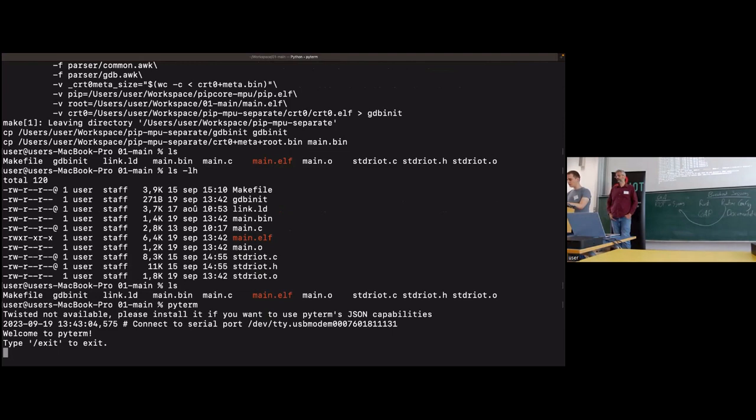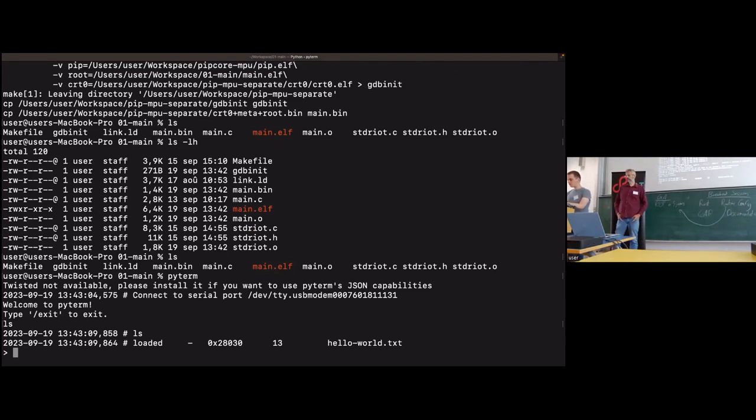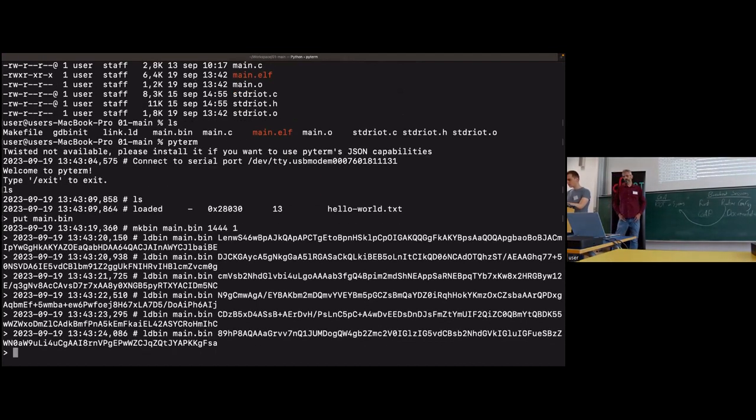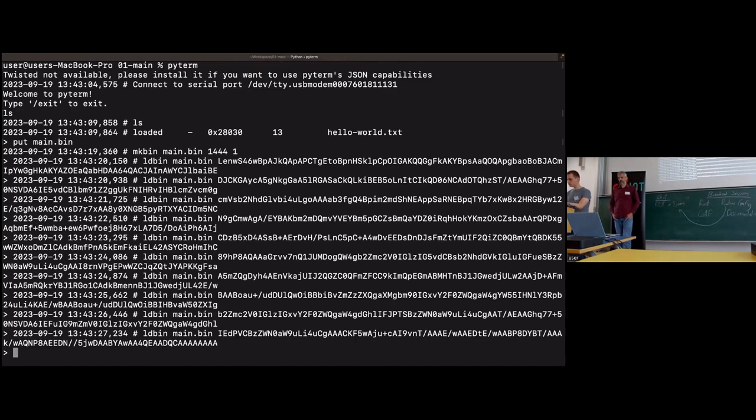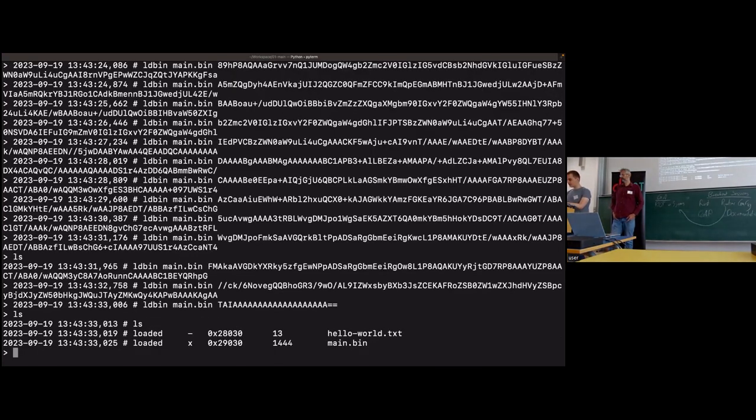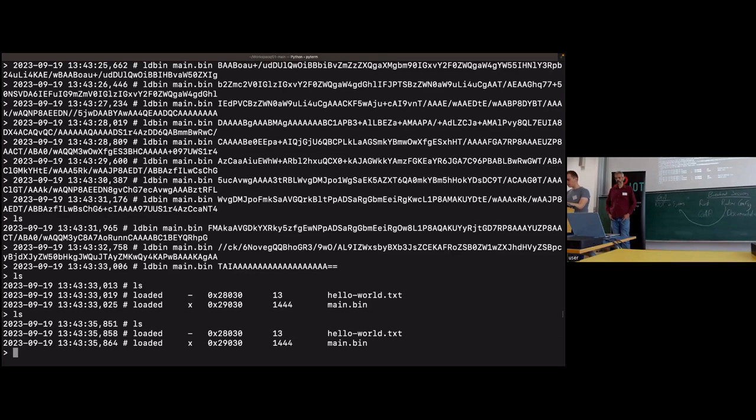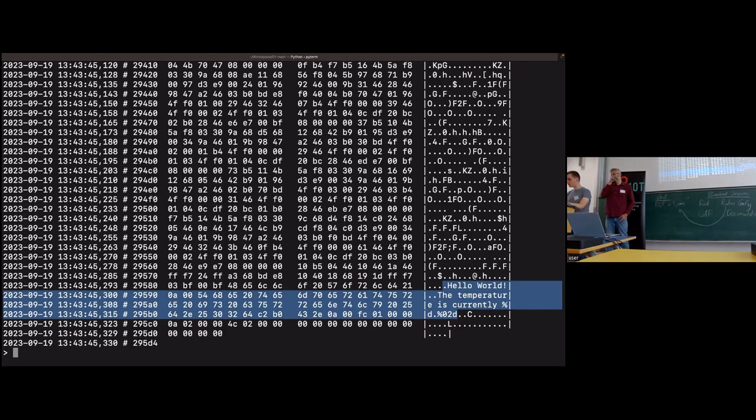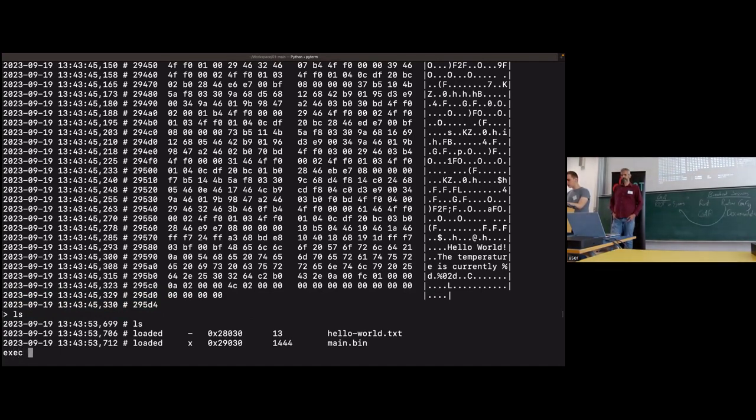So once again, we connect to the terminal, of the serial terminal, right? If I type ls, there is still the hello world file. So now we put main.bin. So the file is being loaded. Okay, if I type ls, we can see that our binary is loaded. So I can xdump the file binary. Okay, we see here the previous string of the main.c file. And now we can use the exec command to execute the main.bin.